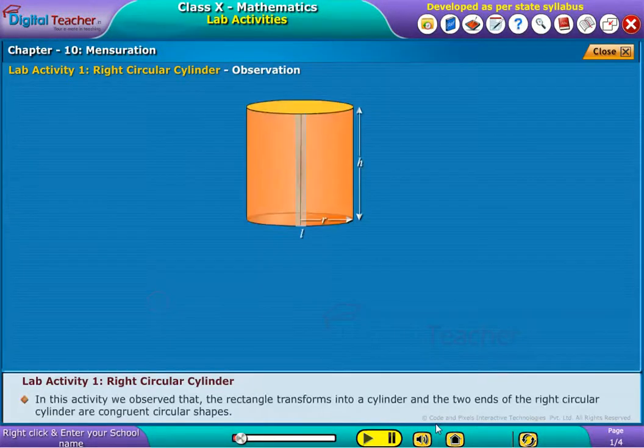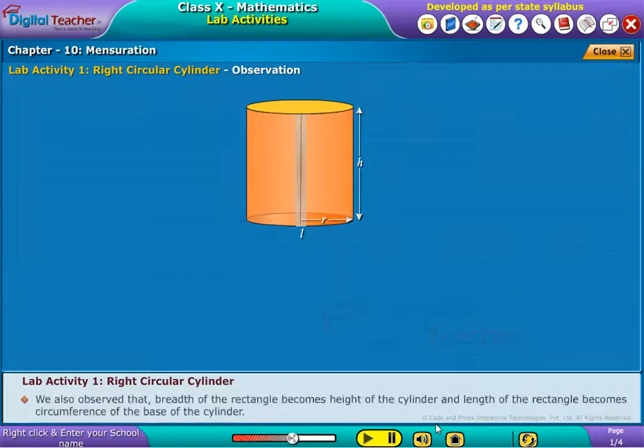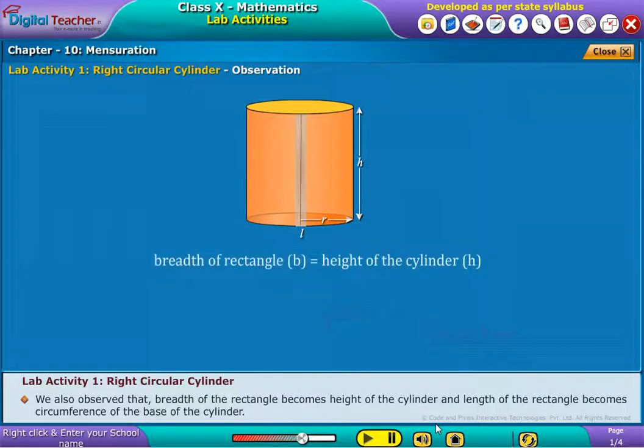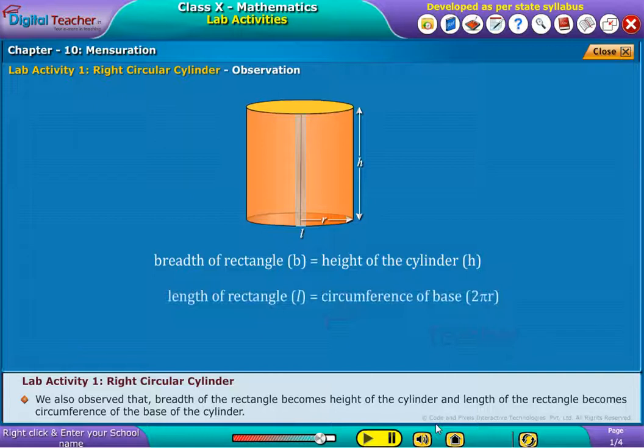In this activity, we observed that the rectangle transforms into a cylinder and the two ends of the right circular cylinder are congruent circular shapes. We also observed that breadth of the rectangle becomes height of the cylinder and length of the rectangle becomes circumference of the base of the cylinder.